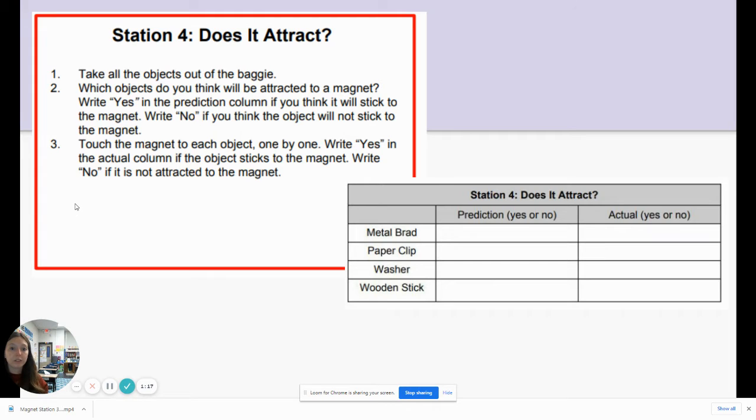Write no if you think the object will not stick to the magnet or not be attracted. Touch the magnet to each object one by one. Write yes in the actual column if the object sticks to the magnet. Write no if it is not attracted to the magnet. So the bottom of your paper looks like this. This is what we're working on right now.